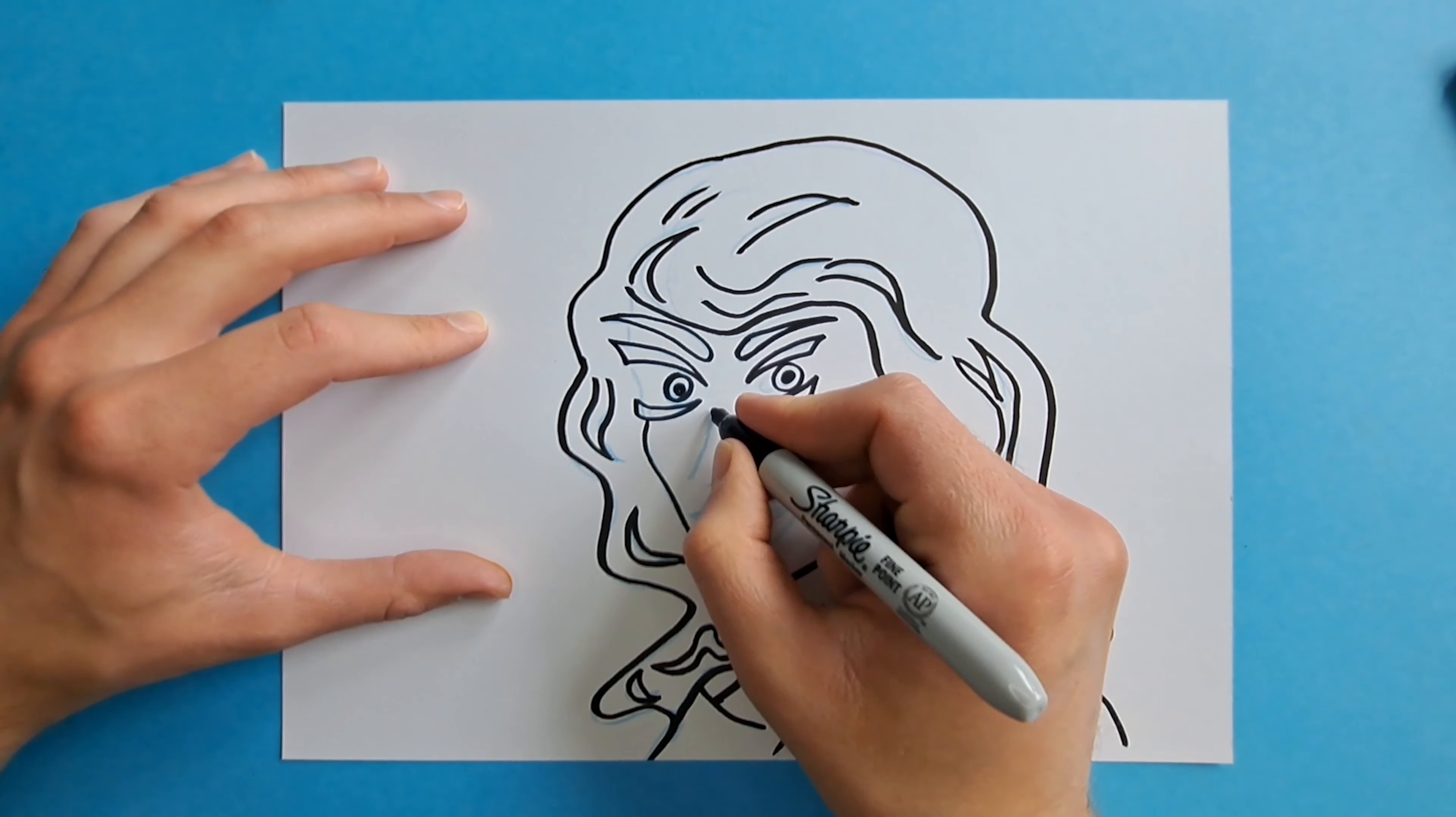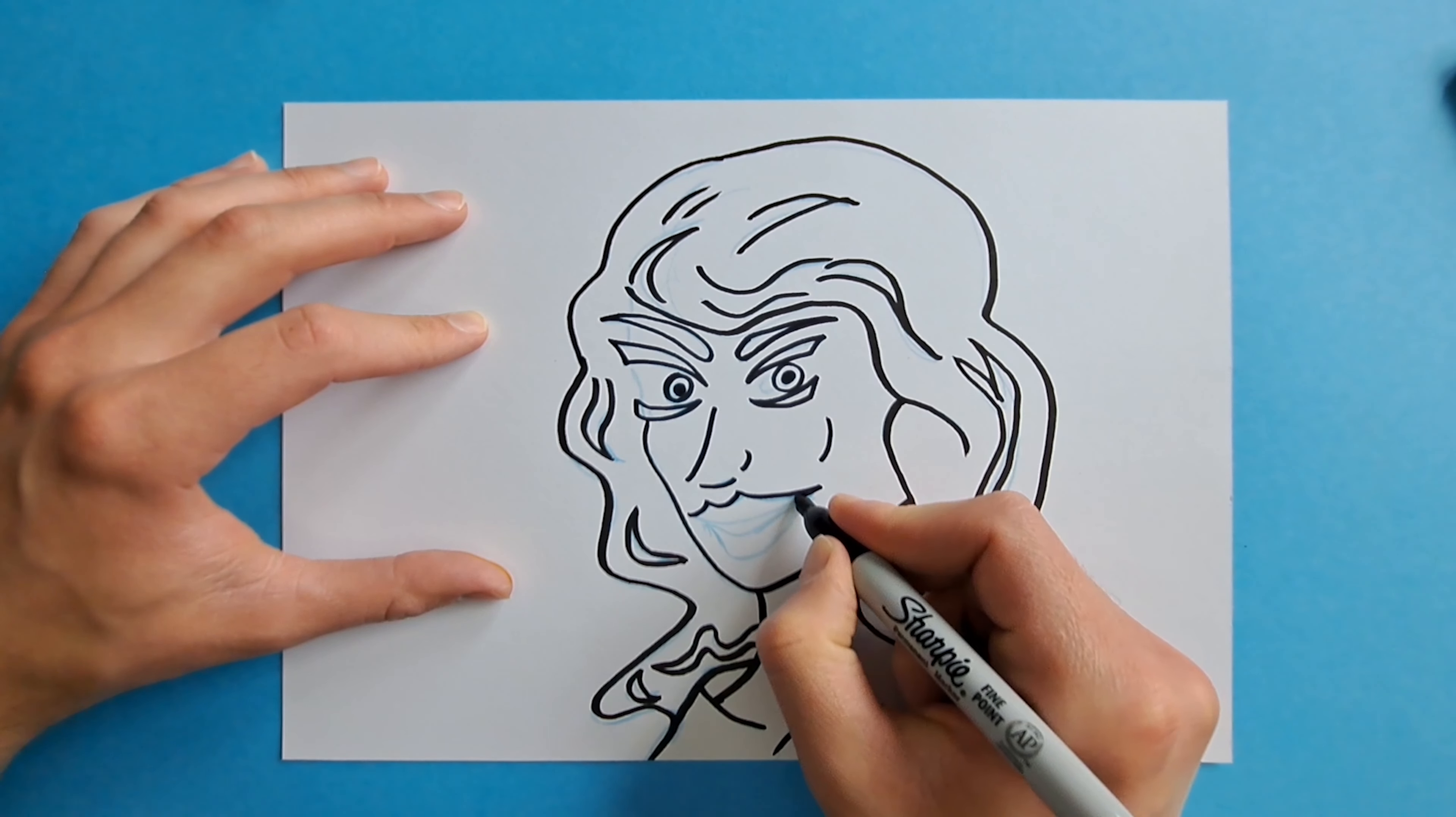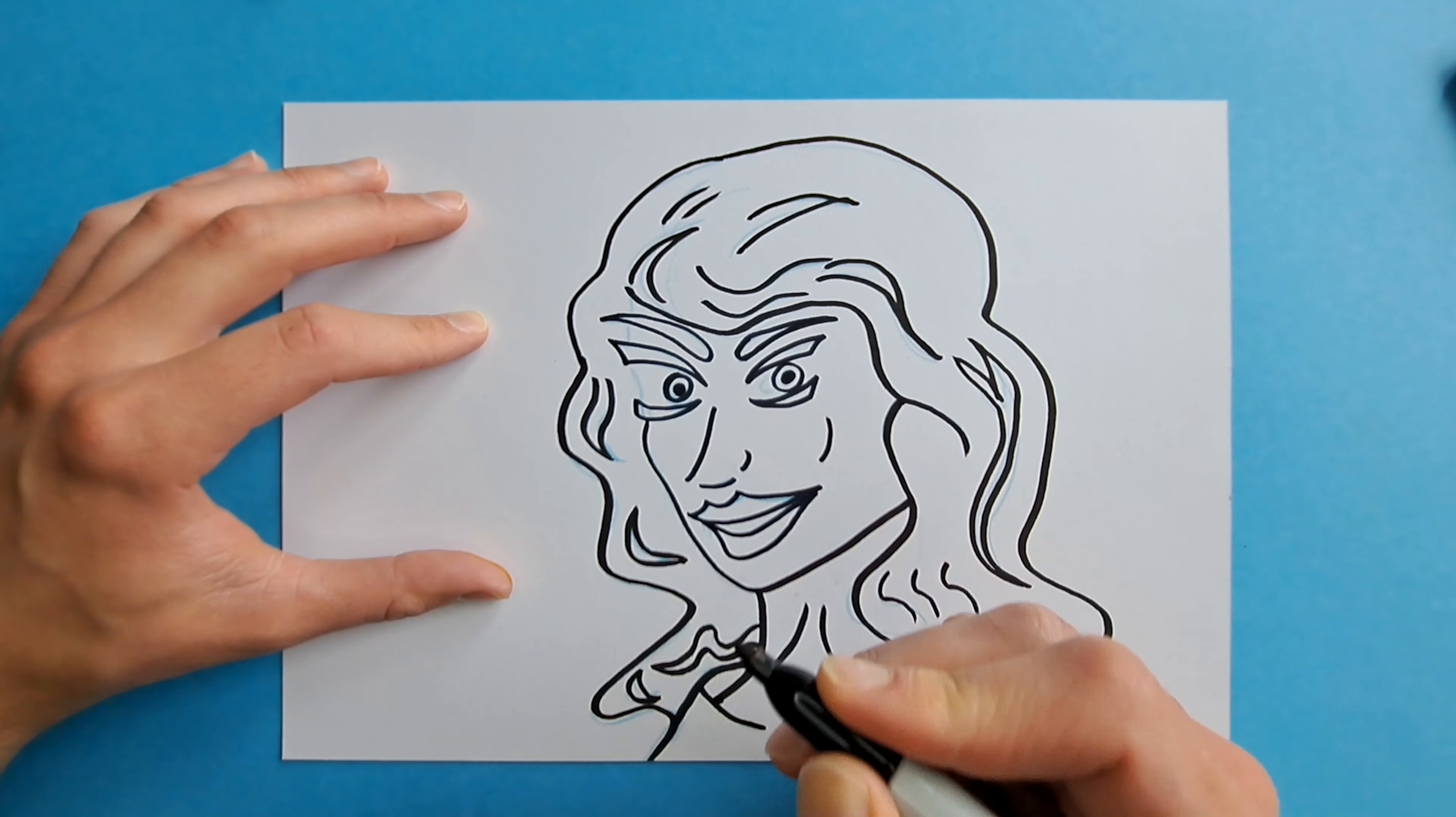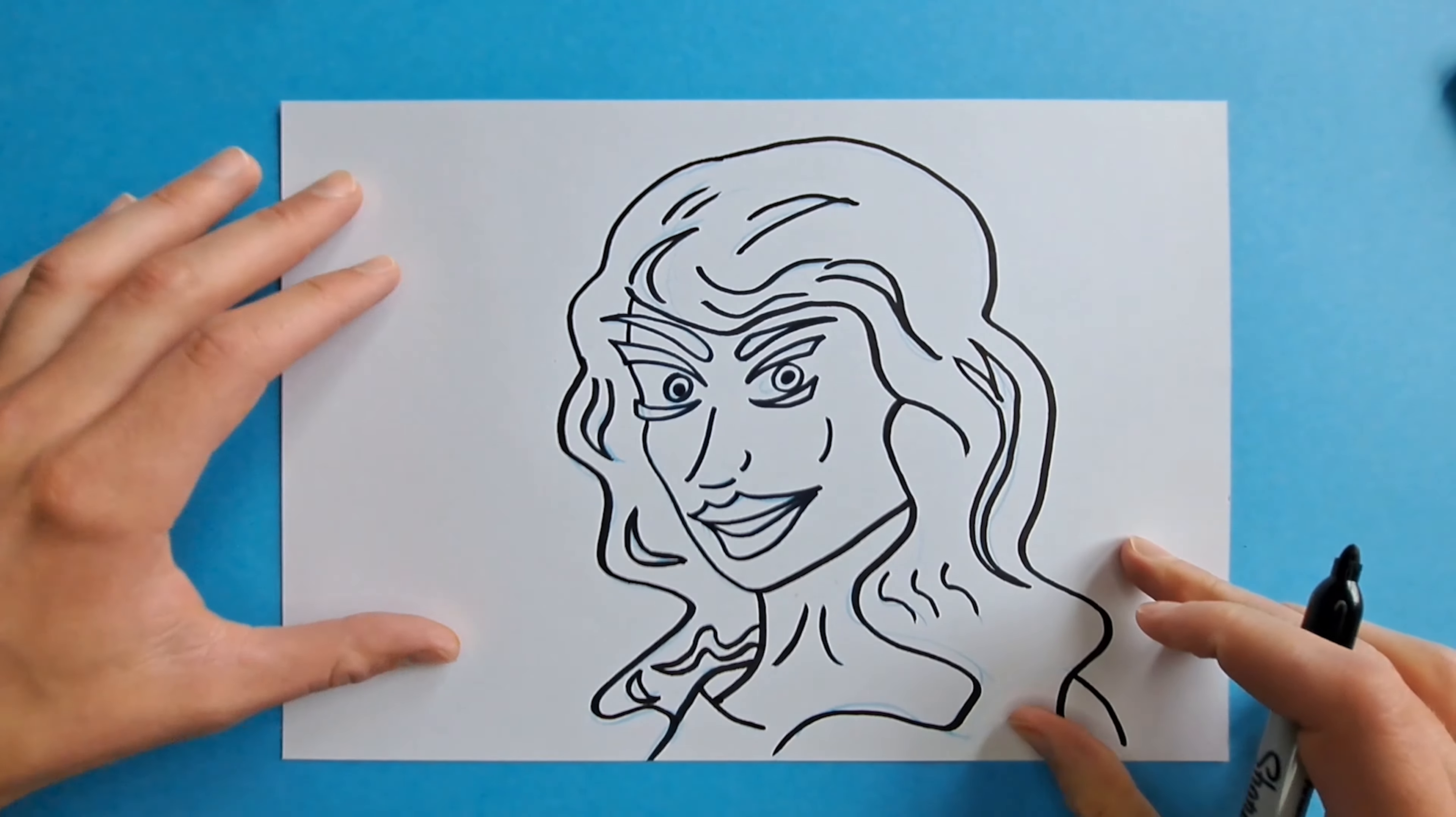And I'm going to add her nose like this, and her cheekbone. And then her mouth, going up here and a curved line. And I'm going to close this gap over here, which adds for the contrast of her face.